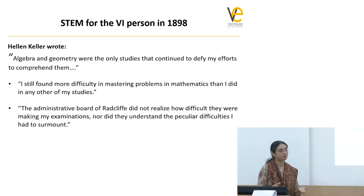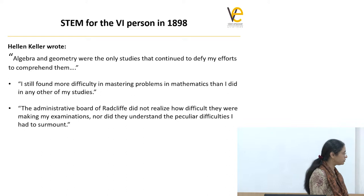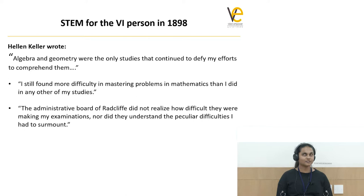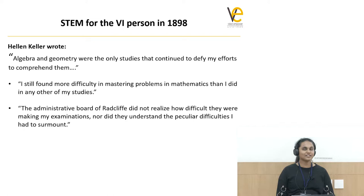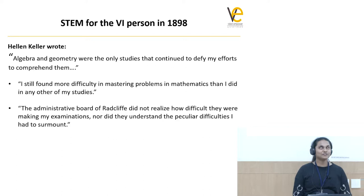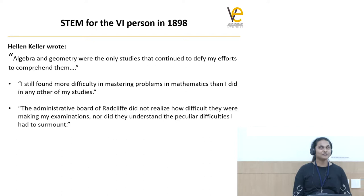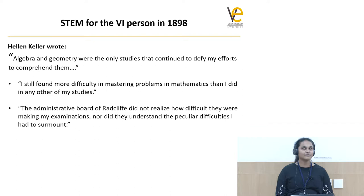To highlight the magnitude of the STEM education problem for the visually impaired, Helen Keller wrote that algebra and geometry were the only courses she found difficult — and this was in 1898. Math was one of the toughest subjects for her. She tells us her college wasn't aware of how to cater to her needs and how to teach her math courses. This was long back when she was alive.